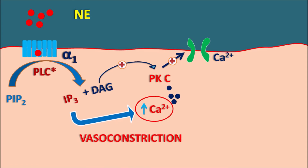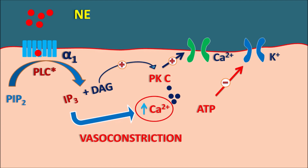By this mechanism, norepinephrine produces vasoconstriction through alpha-1 receptors. However, within vascular smooth muscle, vasoconstriction can be controlled by other mediators. One important mediator is ATP, which can act on outward potassium channels. When potassium flows outside, it produces hyperpolarization, thereby inhibiting contraction. ATP can inhibit the potassium channel activity, thereby increasing depolarization of the vascular smooth muscle and resulting in vasoconstriction.